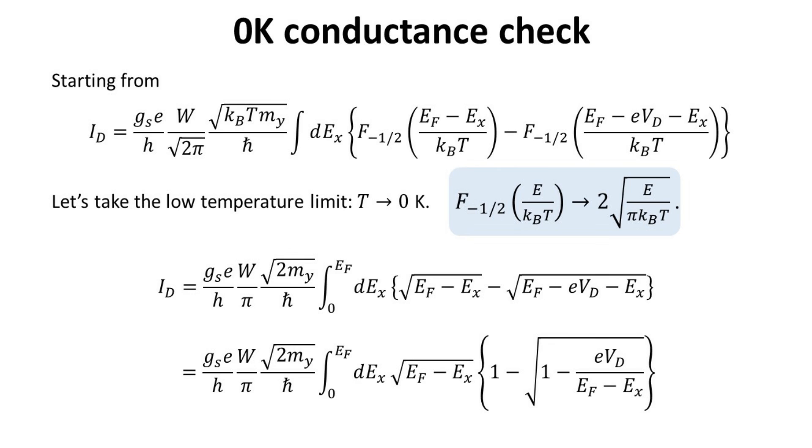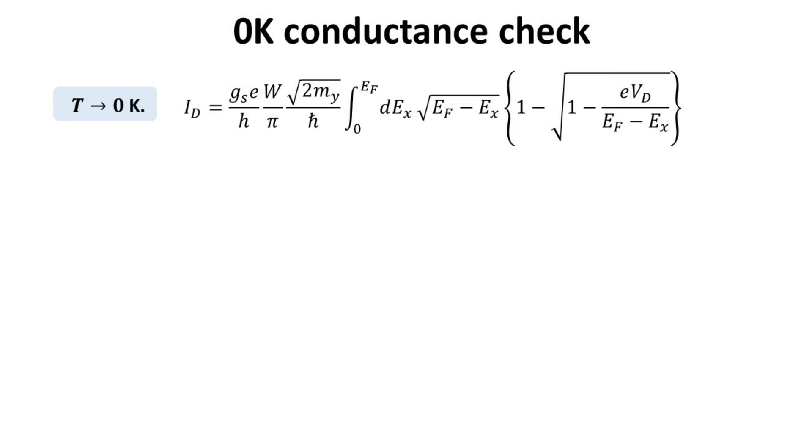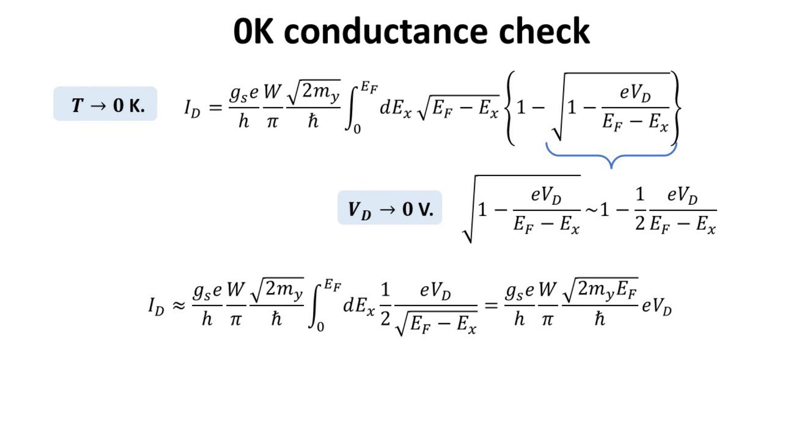Now, we have the current expression for the zero temperature limit. We can further take the limit of zero bias, which is the limit where conductance is being defined. Here, the square root can be Taylor expand up to the linear term in VD. With this, we arrived at a closed form expression for the current, at zero temperature and in the limit of small VD bias.